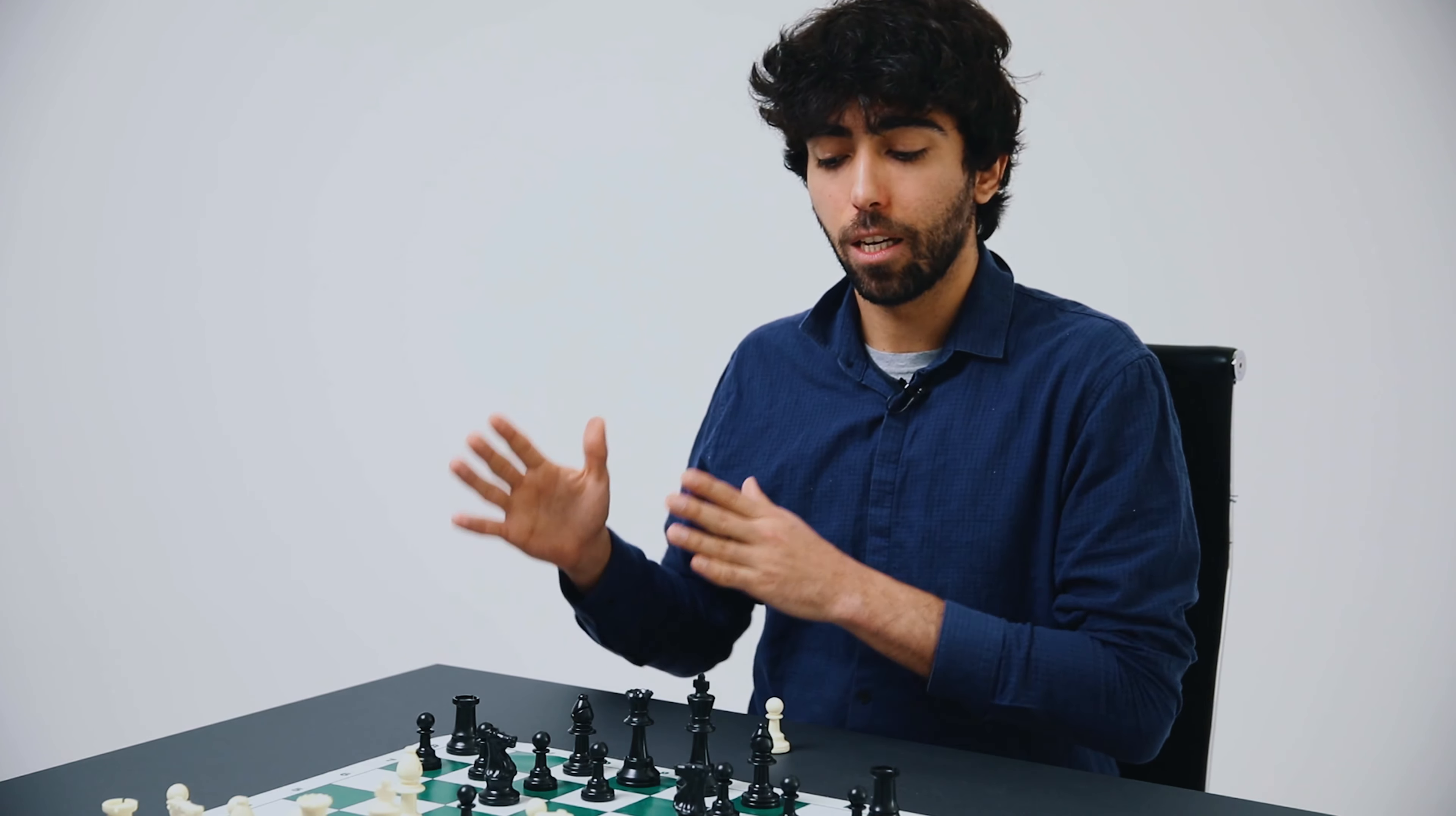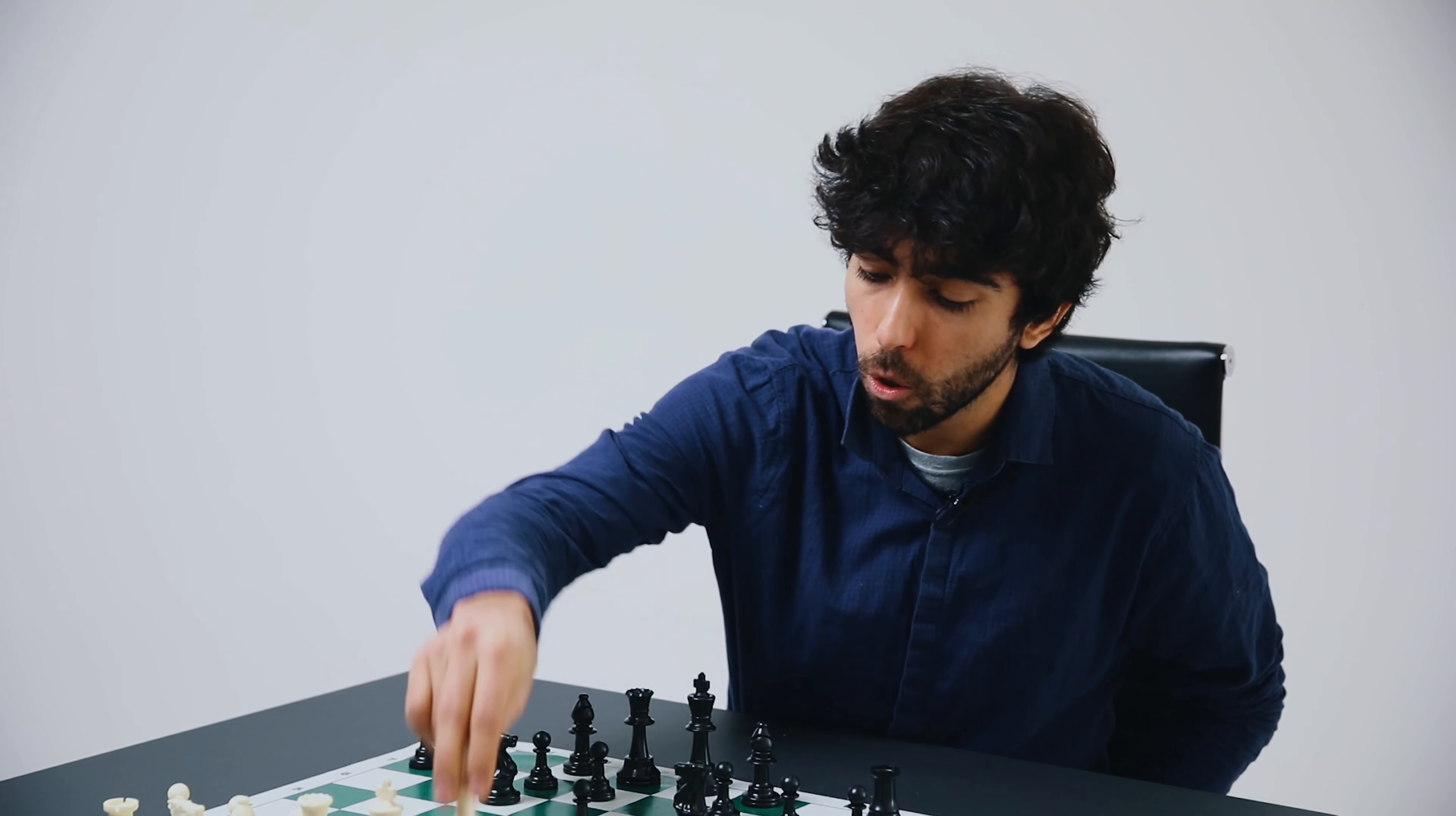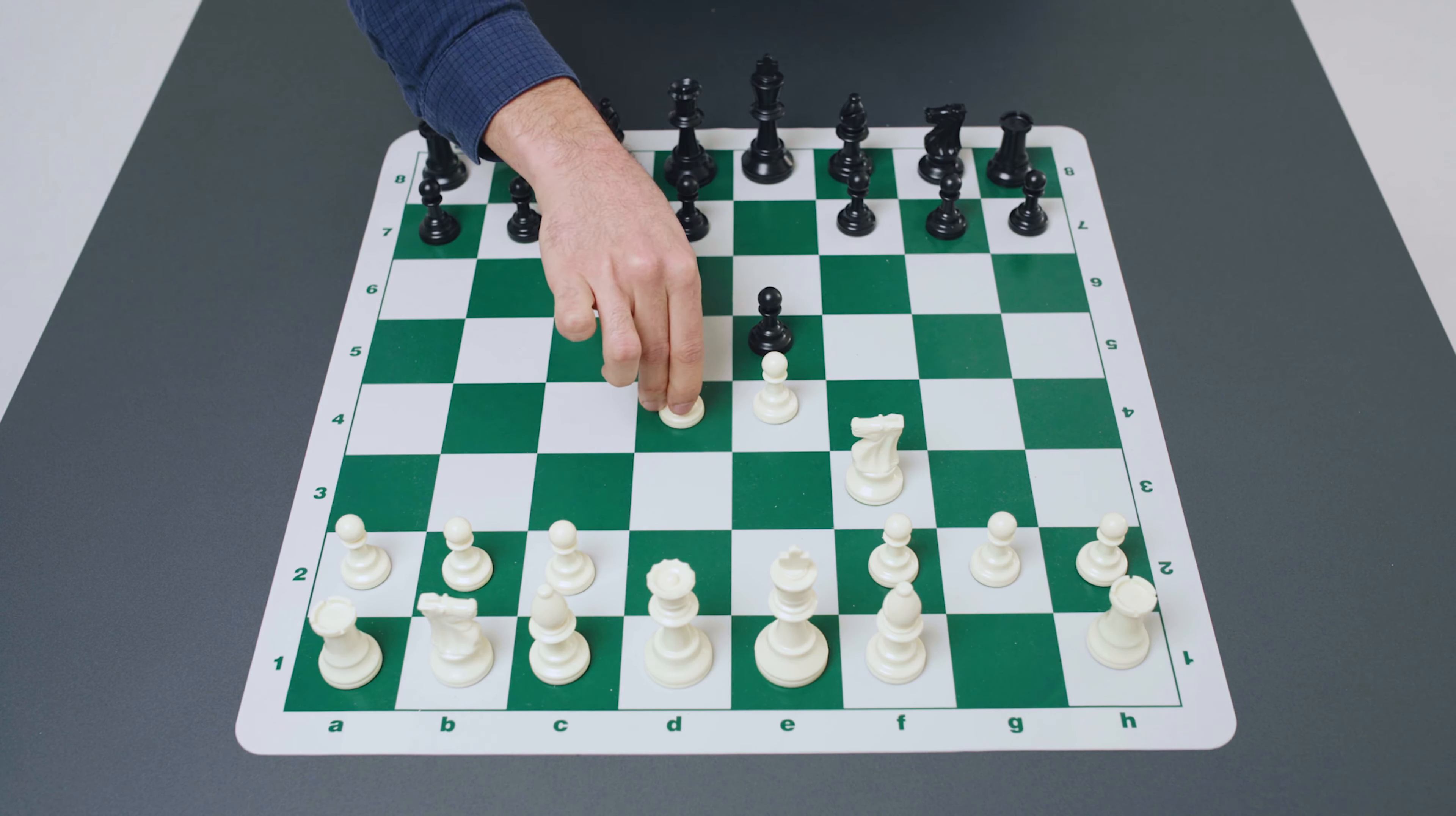White can also continue much more slowly and this is the main line these days and defend the pawn on e4. This is known as the modern bishop's opening and this is the position that you'll see most modern grandmasters playing. We'll discuss the typical maneuvers that arise in this position in a video later on.